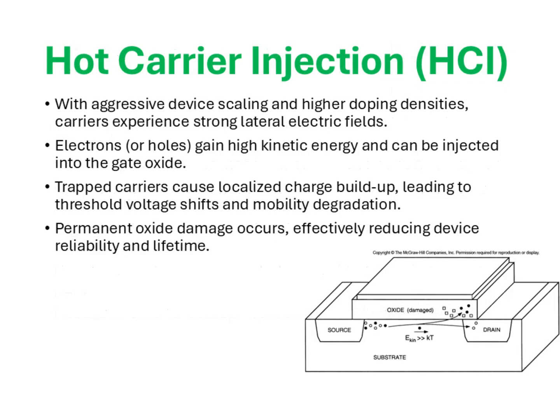Continuing from our discussion on oxide breakdown, another critical reliability issue in deeply scaled MOSFETs is hot carrier injection, often referred to as HCI. When we reduce geometries and simultaneously increase doping densities, the electric fields near the drain region become extremely strong. Under these high-field conditions, electrons — or in some cases holes — gain significant kinetic energy. These highly energized carriers, called hot carriers, can be accelerated to the point where they surmount the energy barrier and get injected into the gate oxide.